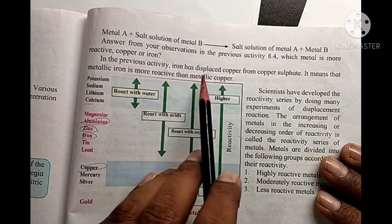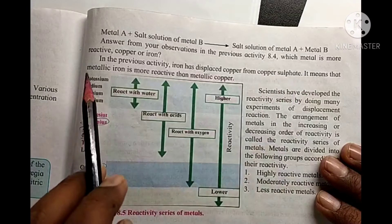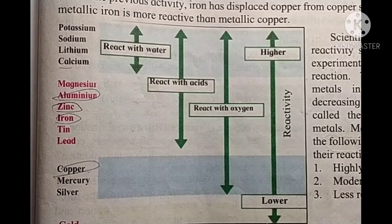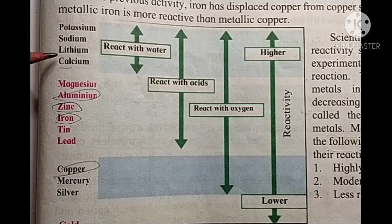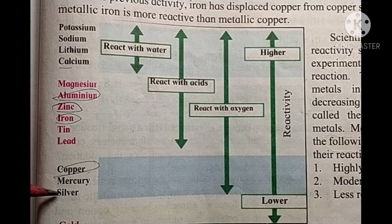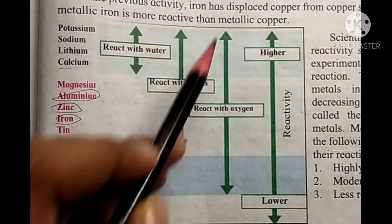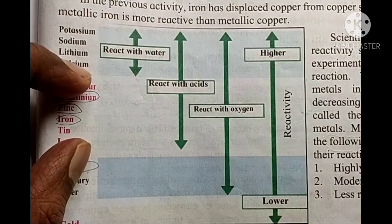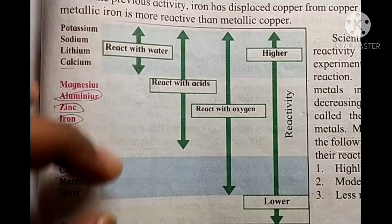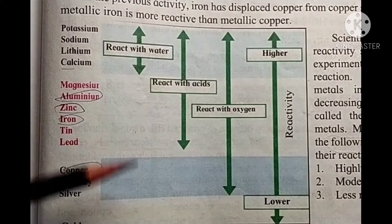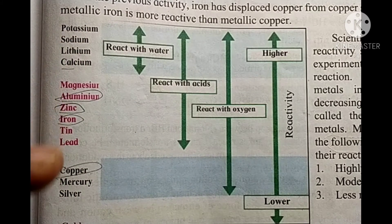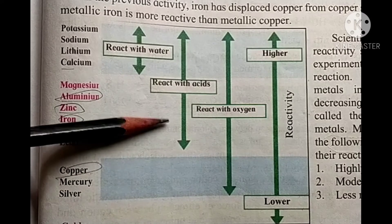In the previous activity, iron displaced copper from copper sulfate solution, meaning metallic iron is more reactive than metallic copper. The reactivity series of metals in order is: potassium, sodium, lithium, calcium, magnesium, aluminum, zinc, iron, tin, copper, mercury, silver, gold. These metals are divided into highly reactive, moderately reactive, and less reactive groups.